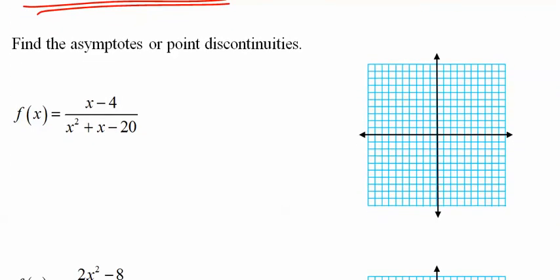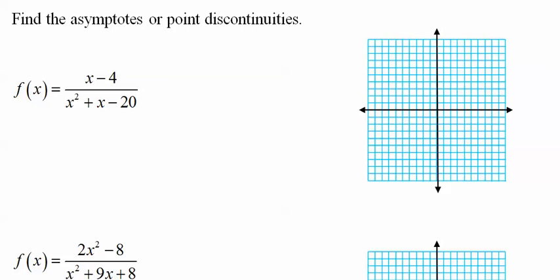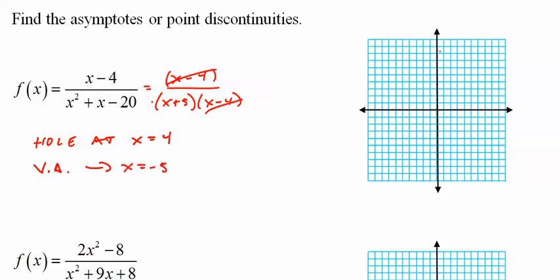So let's try a couple examples. You may want to pause, look at your notes and try them on your own because I'm going to buzz through them quickly. x minus 4 over x plus 5 times x minus 4. These cancel, so I know I'll have a hole at x equals 4. I know I have a vertical asymptote at x equals negative 5.